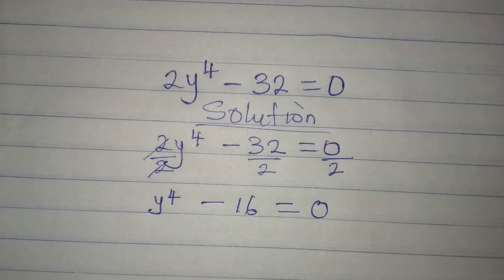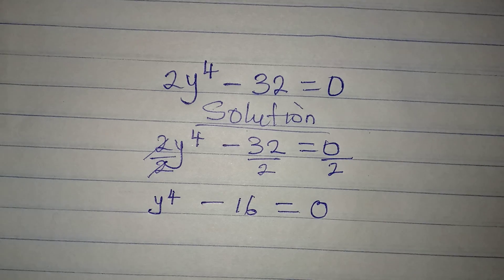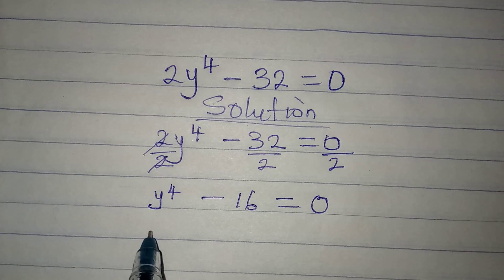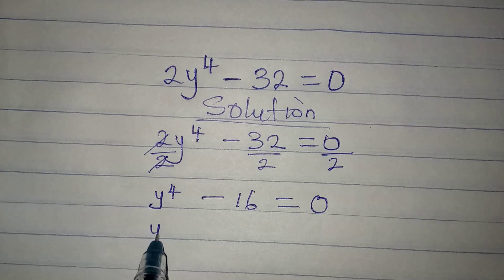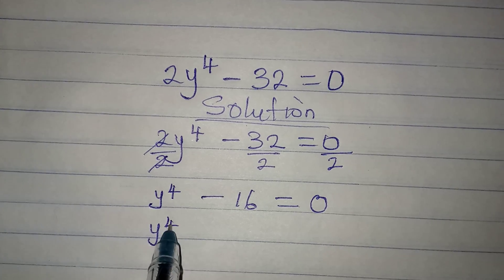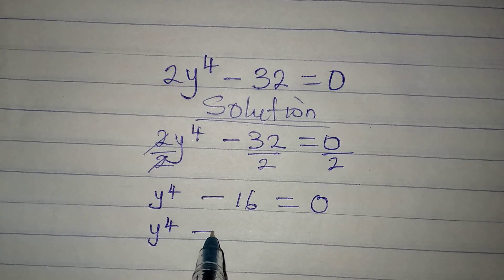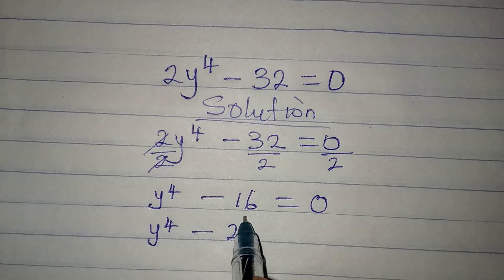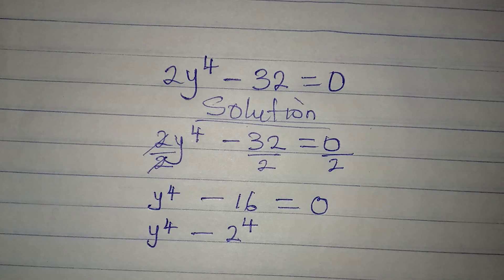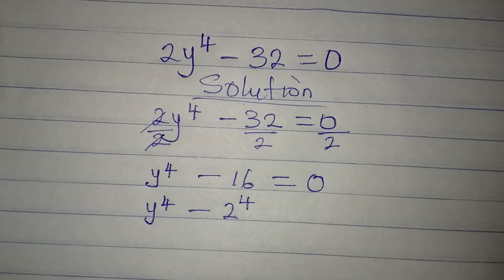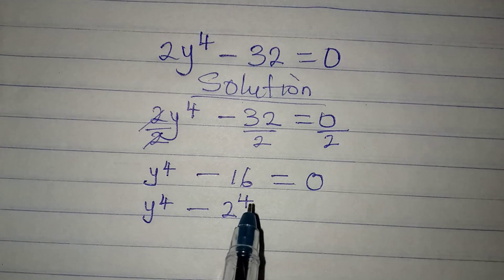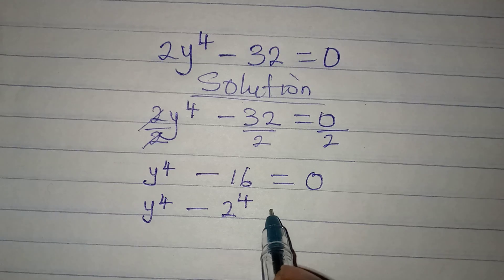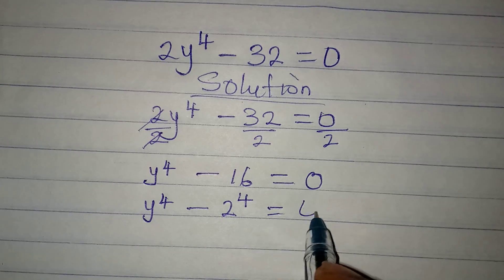This will be equal to 0 divided by 2, which gives 0. Now remember, this is the same thing as y to the power 4 minus 2 to the power of 4, because 2 to the power 4 gives 16. This is equal to 0.